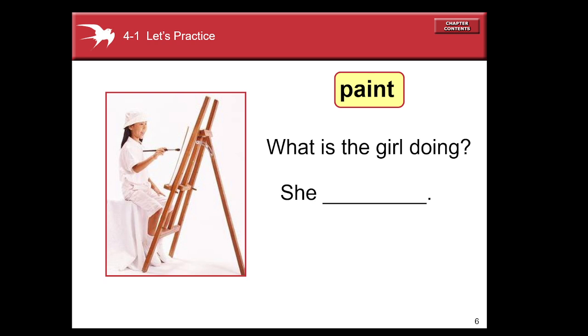Let's move on. Now, look at this picture. Paint. What is the girl doing? Please, look at the picture. You tell me. Correct. She is painting. By saying this, we are describing the action. She is painting. Good job. Let's continue.